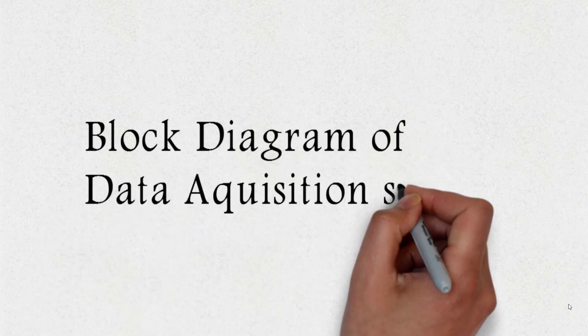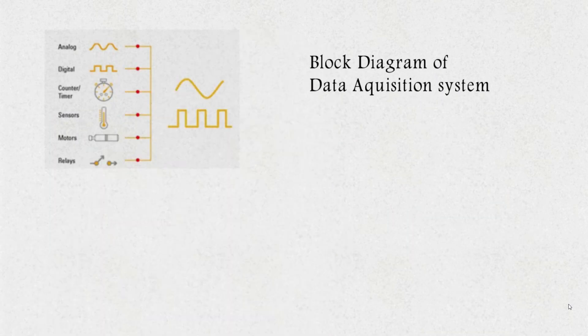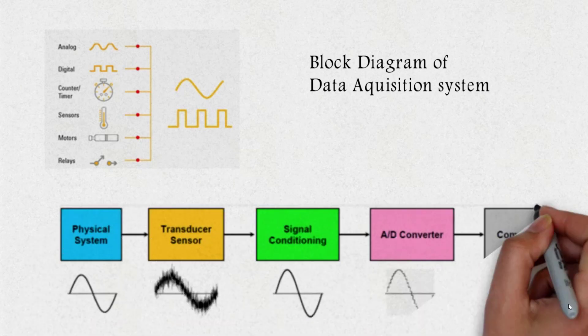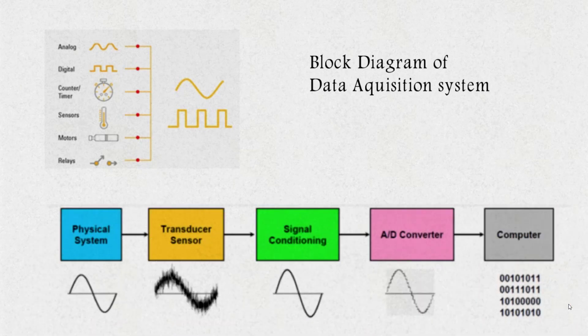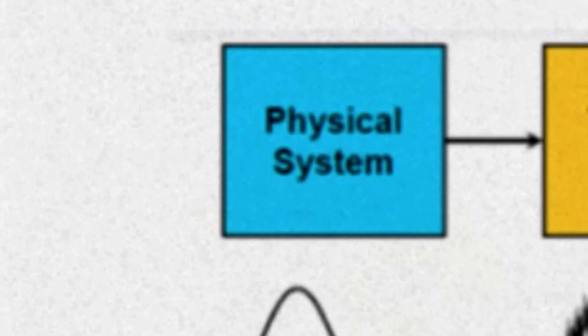Now let's move to the block diagram of data acquisition system. The first block is the physical system. The input from the physical system can be in any form, either an analog signal, pressure, temperature, displacement, etc.